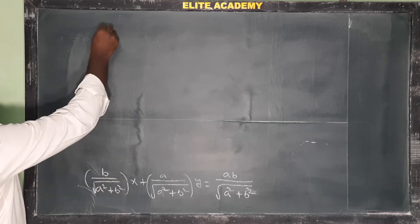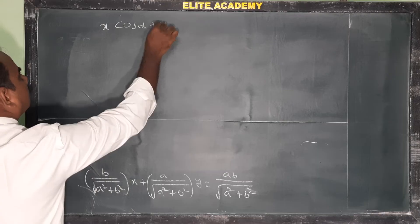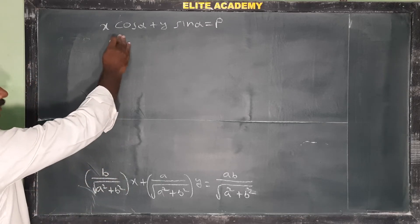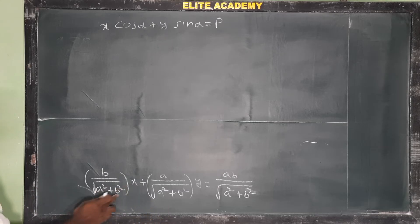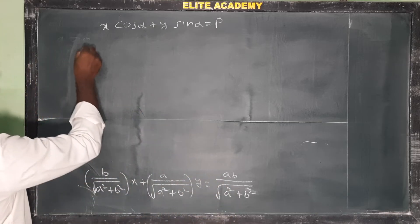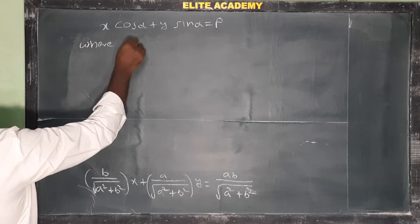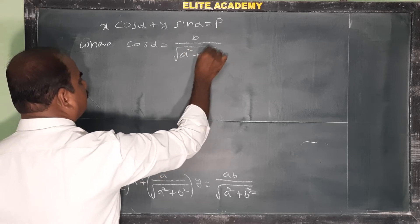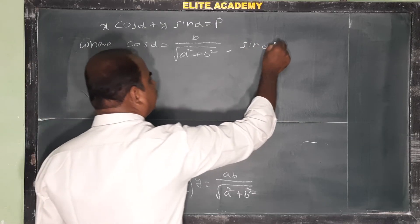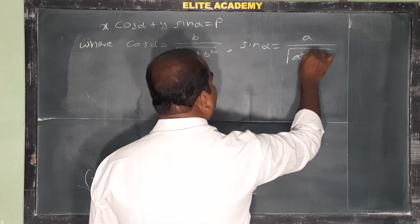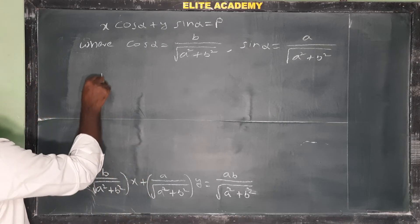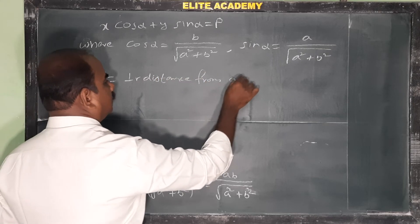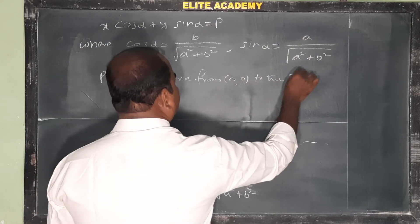Writing in normal form: x cosα + y sinα = p, where cosα = b/√(a²+b²) and sinα = a/√(a²+b²). This is the normal form of the straight line.